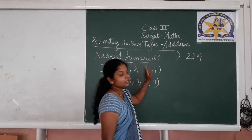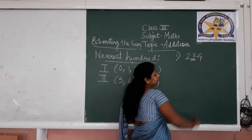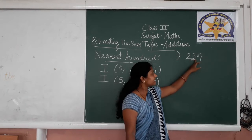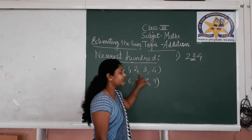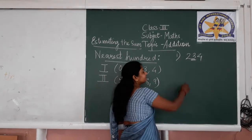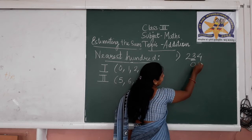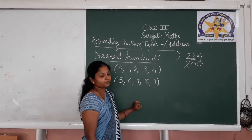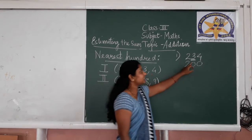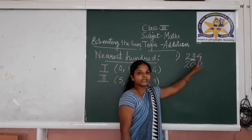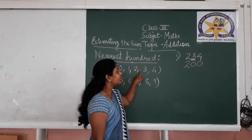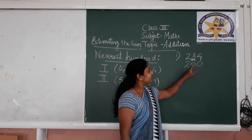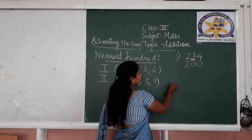If it is the nearest 100, you are going to check the digit at the 10's position. Here, the digit at 10's position is 3. 3 comes in Group 1. If it is in Group 1, write down 0 at the 10's and 1's position and keep the remaining digit as it is. So if the digit at 10's position is in Group 1, write 0 at 1's and 10's place and keep the remaining number as it is. Now let us see a 4-digit number.